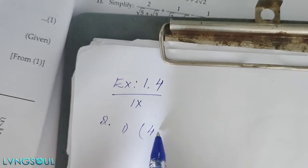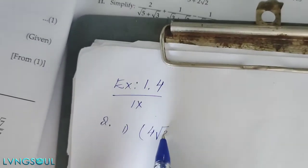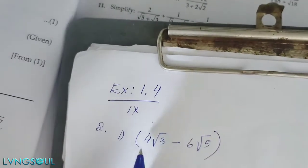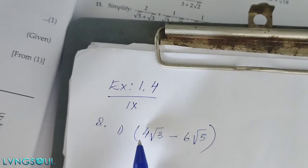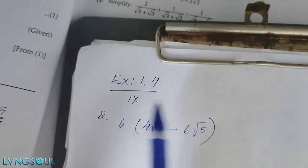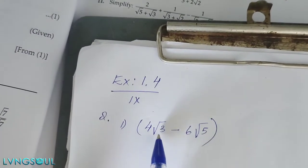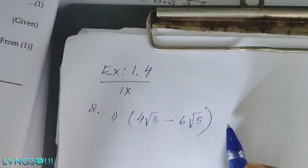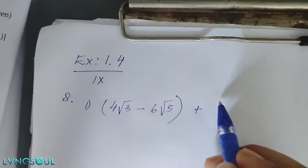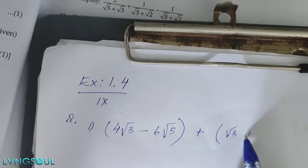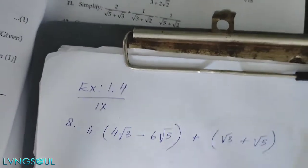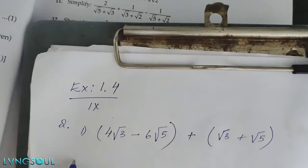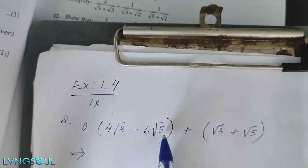Number one: 4 root 3 minus 6 root 5. These are irrational numbers — root 3 and root 5. We need to simplify this. So we look at root 3 plus root 5 together.